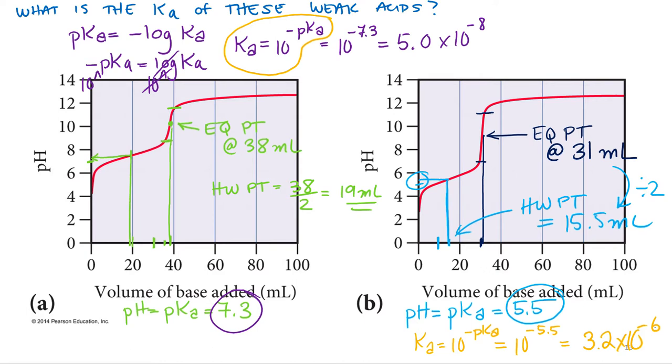Alright, so that's how you determine the Ka and pKa from an acid. Now in a second, I'll talk about how we do it a little bit more accurately. But in the meantime, this will give us a good opportunity to ask a question. So which acid A or B is stronger?